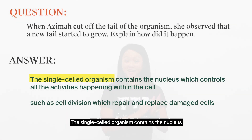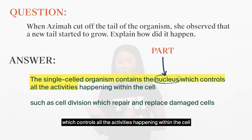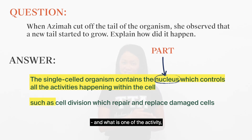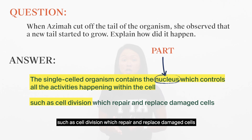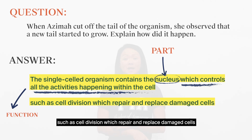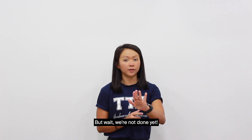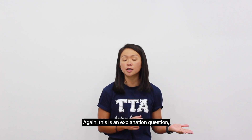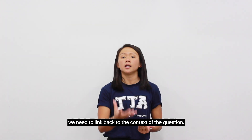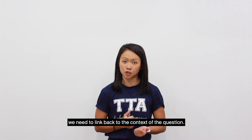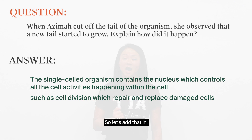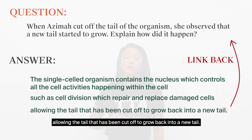So the final answer will be: the single-cell organism contains the nucleus, which controls all activities happening within the cell, such as cell division, which repairs and replaces damaged cells. But wait, we are not done yet — this is an explanation question, so we need to link back to the context. Allowing the tail that has been cut off to grow back into a new tail.